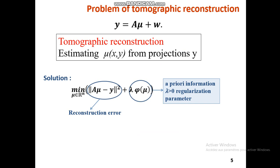In practice, the mathematical problem is an ill-posed inverse problem. We have to estimate the image mu from projection y. So, we must minimize the Euclidean distance between the projection y and the estimate mu. In order to accelerate the convergence of this equation, we add a regularization parameter based on a priori information.